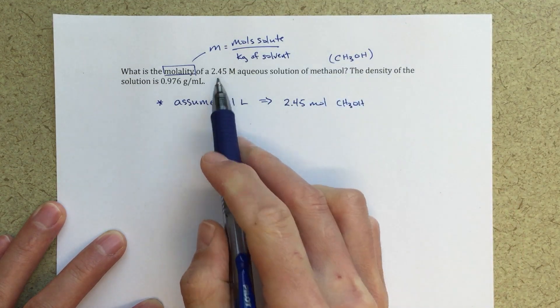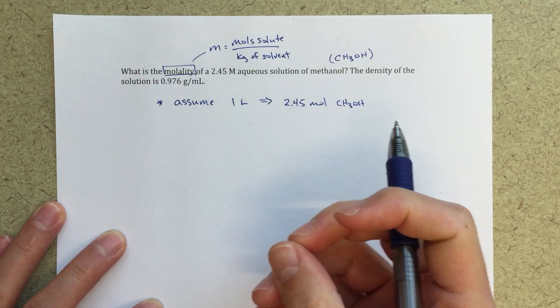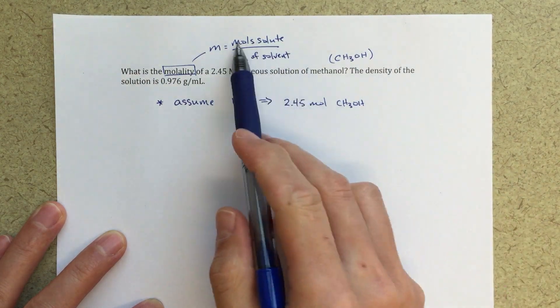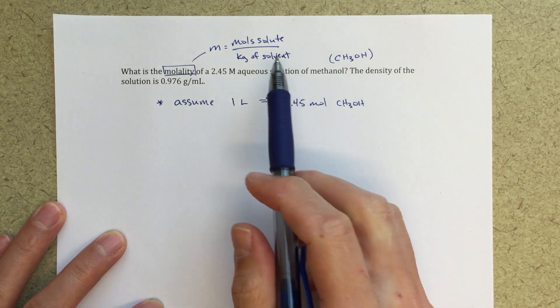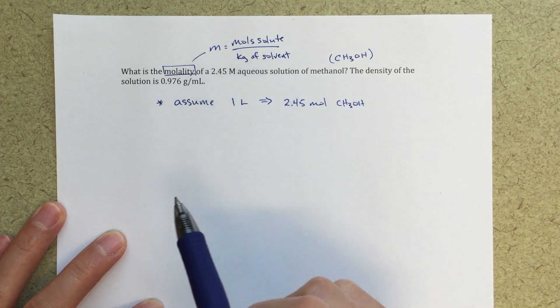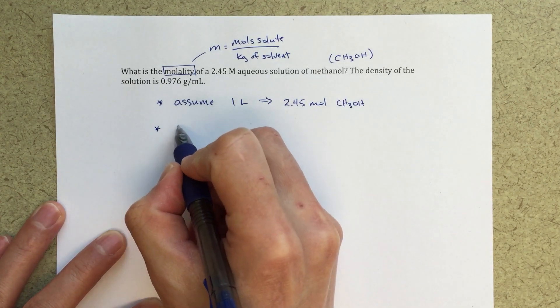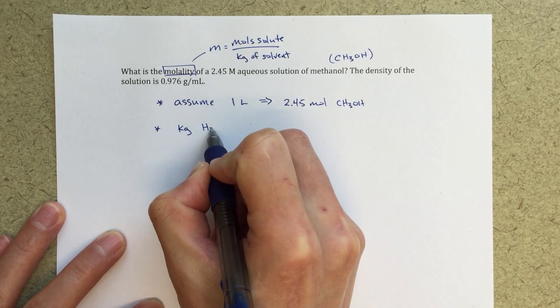Right away I can say, if this is my molarity, then I'll have 2.45 moles of methanol, and that's going to be the thing that goes up here, the moles of solute - I've already got that taken care of. So now I need to figure out what's the kilograms of solvent, the kilograms of just water, and that's really going to be the key.